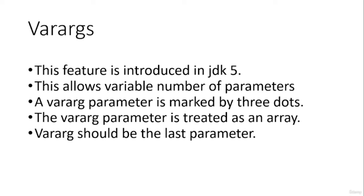That parameter is considered a variable argument parameter, and we can handle it the same way we handle an array. This feature is very helpful when we are not sure how many parameters we need. For example, if a function needs 10 parameters, all of those can be reduced to a single variable argument parameter, avoiding lengthy method signatures.